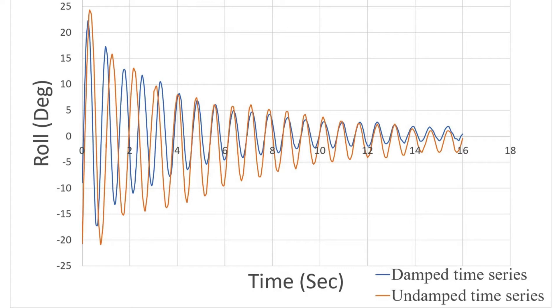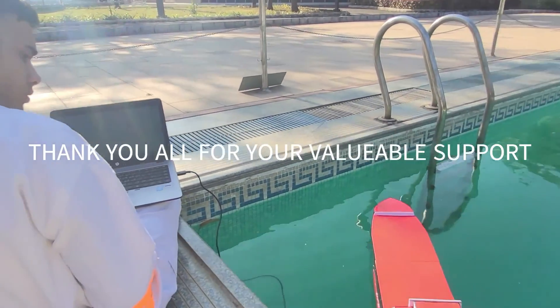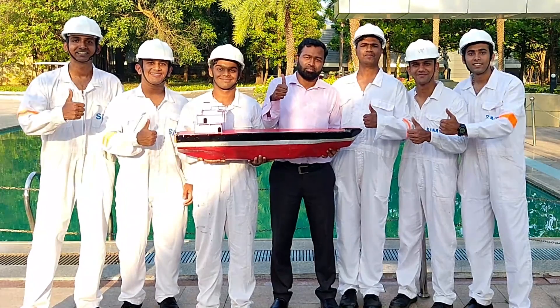This is a combined graph of the system on and off state. The blue line represents the system on and off. The orange line represents the system off. From the graph, it is clearly visible that when the system is in working state, the amplitude of each oscillation has reduced significantly.